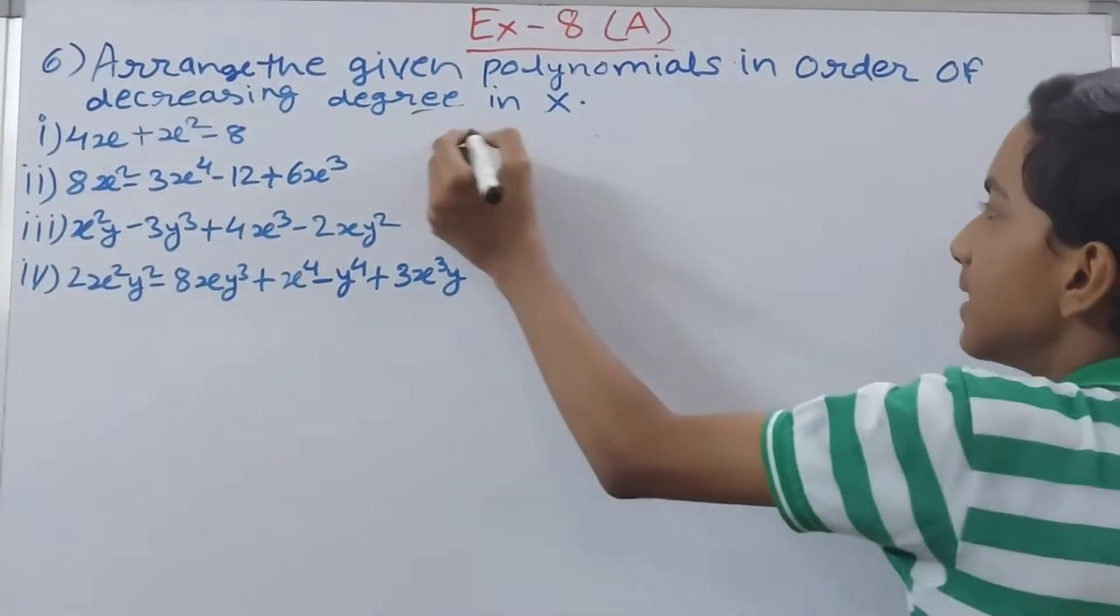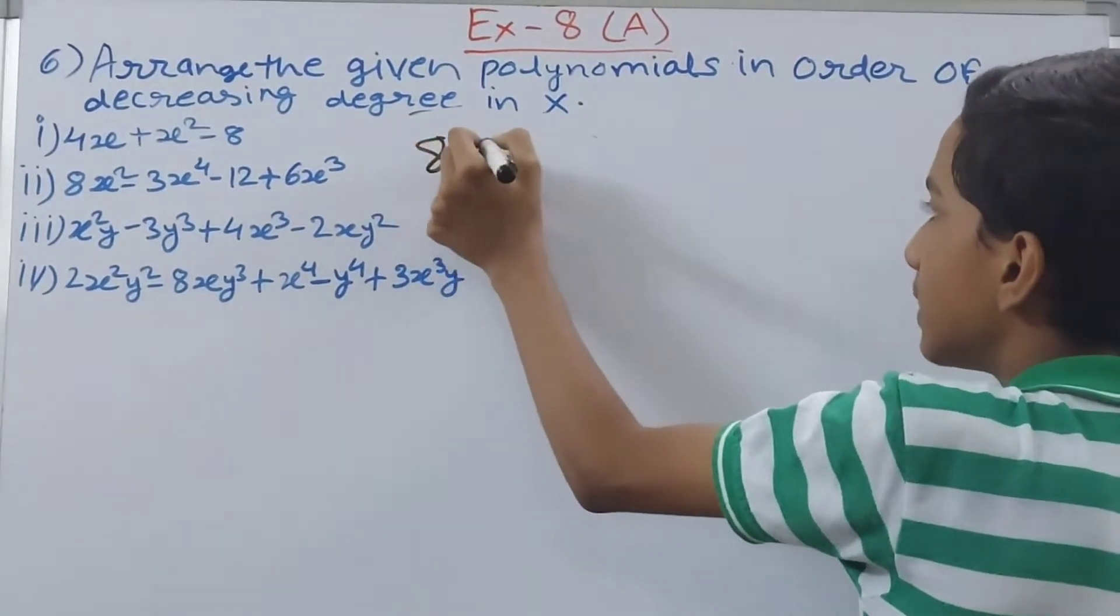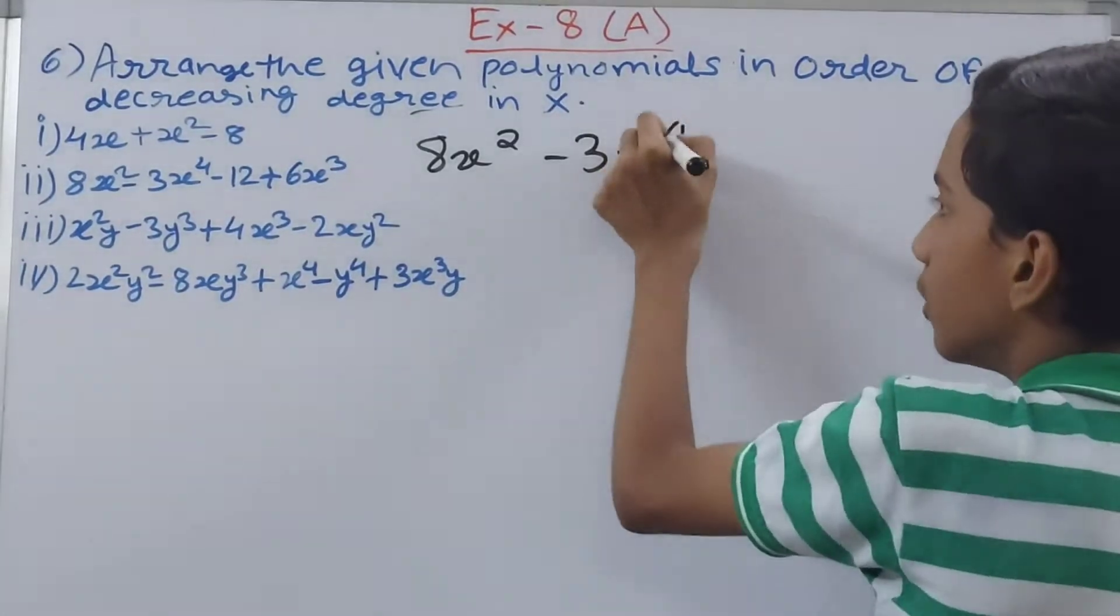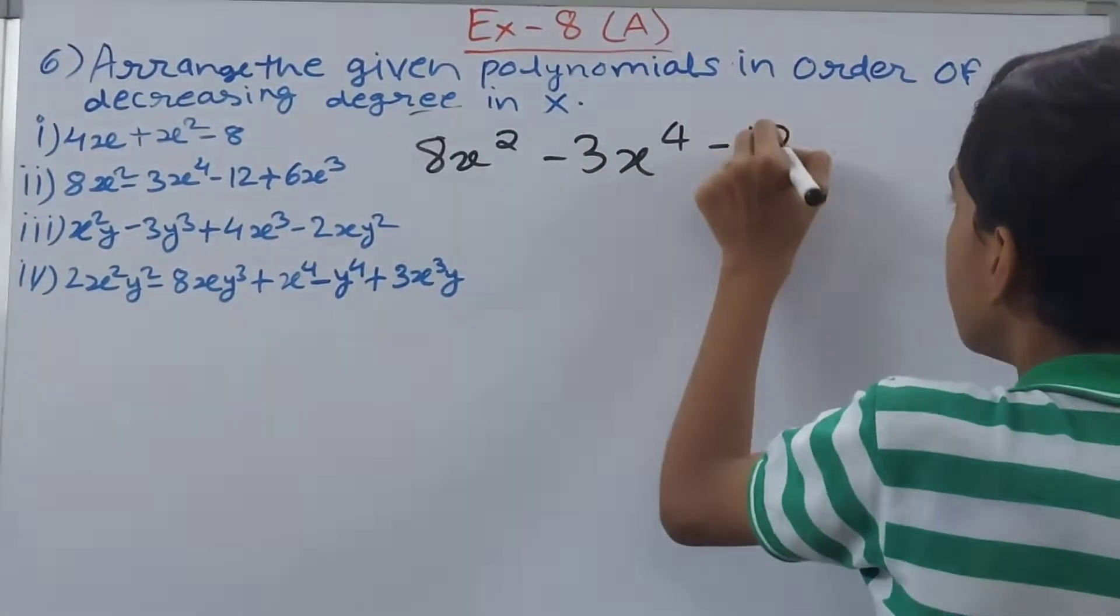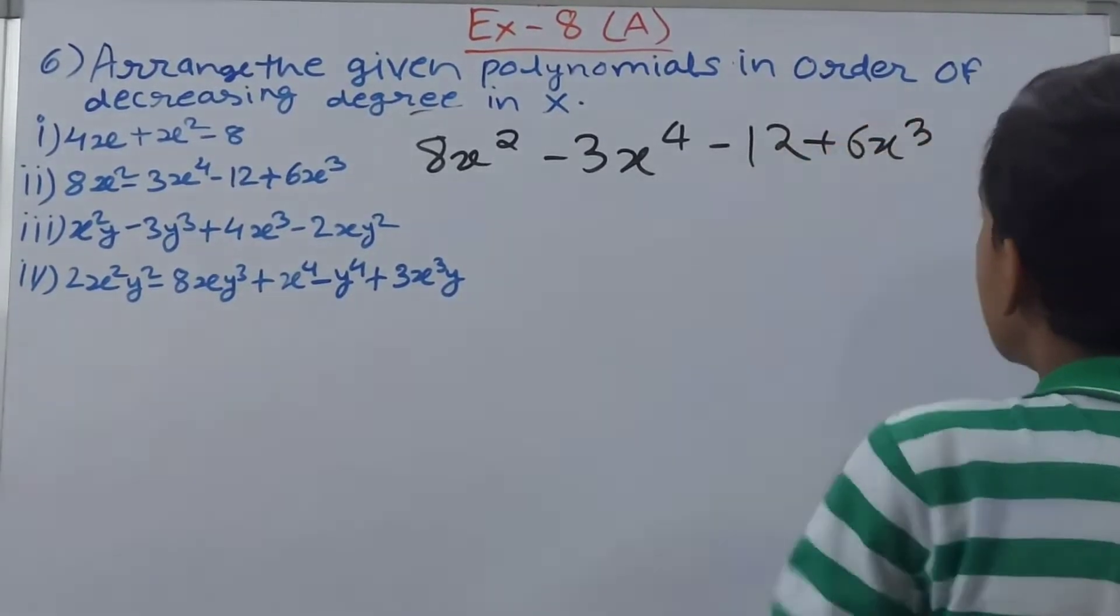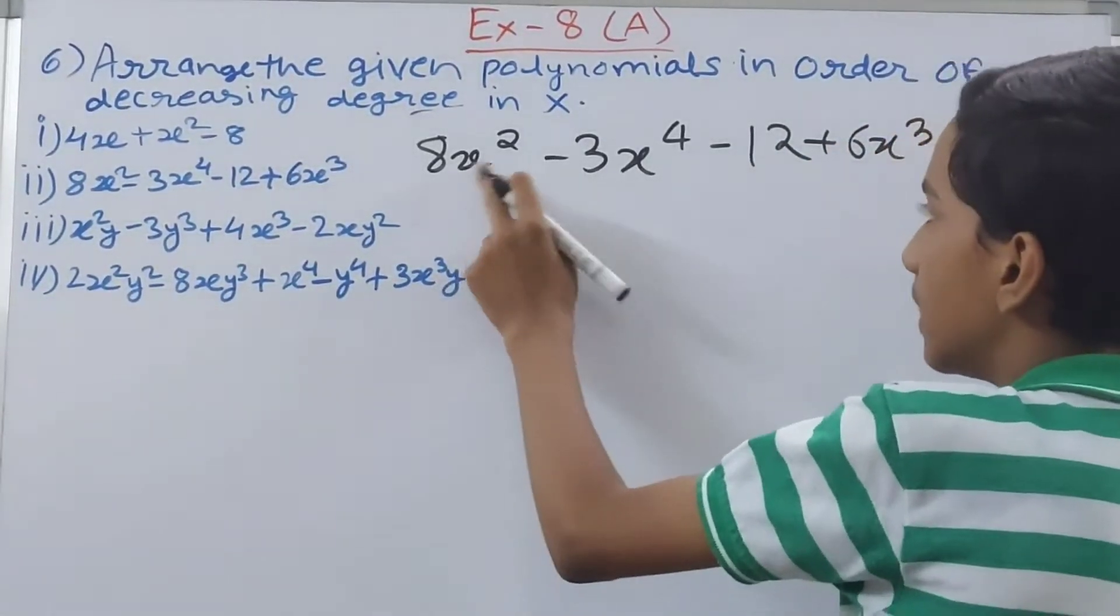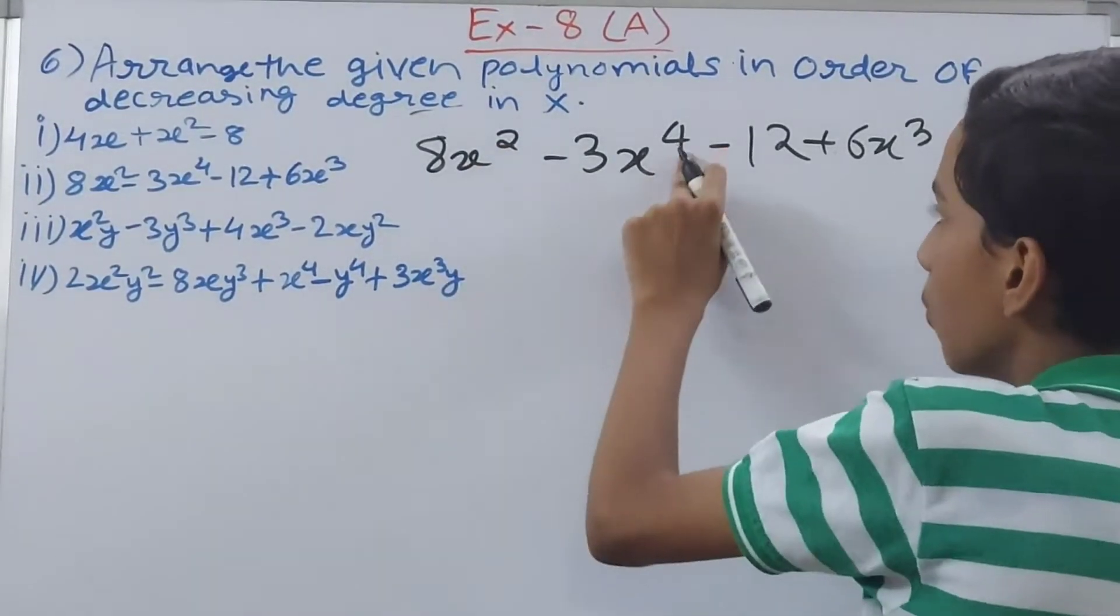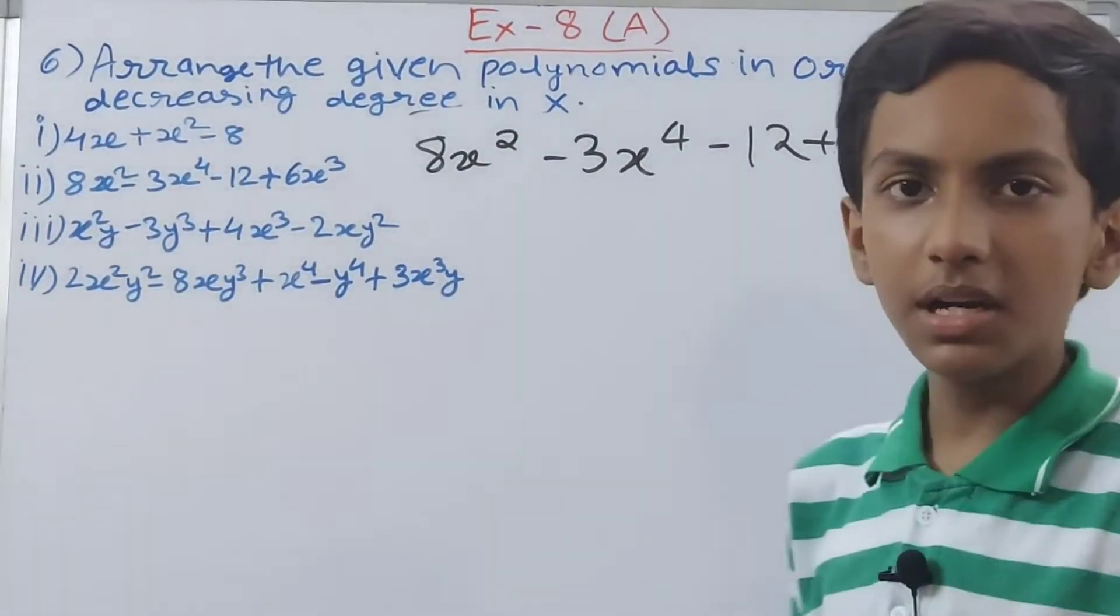Now on to the next part. This is 8x square minus 3x to the power 4 minus 12 and plus 6x cube. In this the greatest one - first of all let us start from 8x square, so here it is 2.